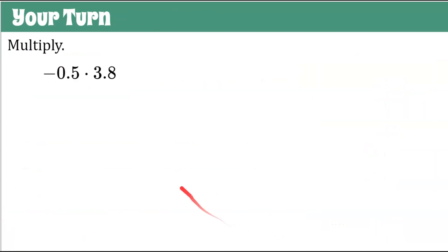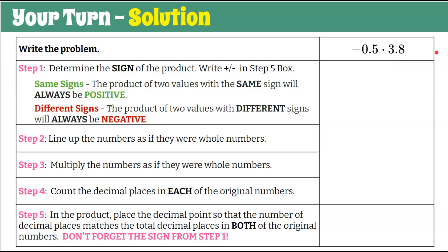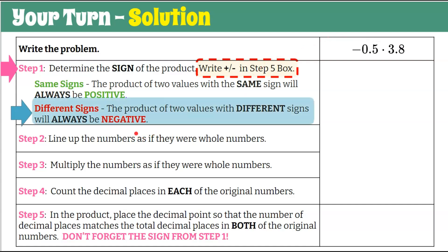Here's another one for you. Multiply negative 5 tenths by 3 and 8 tenths. Go to the graphic organizer, pause, do the five steps, and come back to check your work. Welcome back. Step one: determine the sign. We have a negative and a positive — different signs — so it's going to be negative. Put the negative sign in that box.